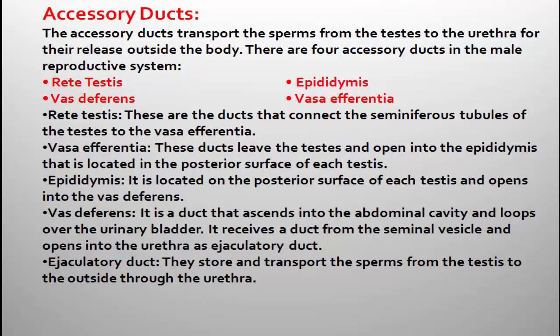Accessory ducts are involved in the transportation of sperms which are produced in the seminiferous tubules, from the testes to the urethra for their release outside the body. The main function of accessory ducts is to transport the sperms produced in the seminiferous tubules to the urethra, from where they are finally released from the body.